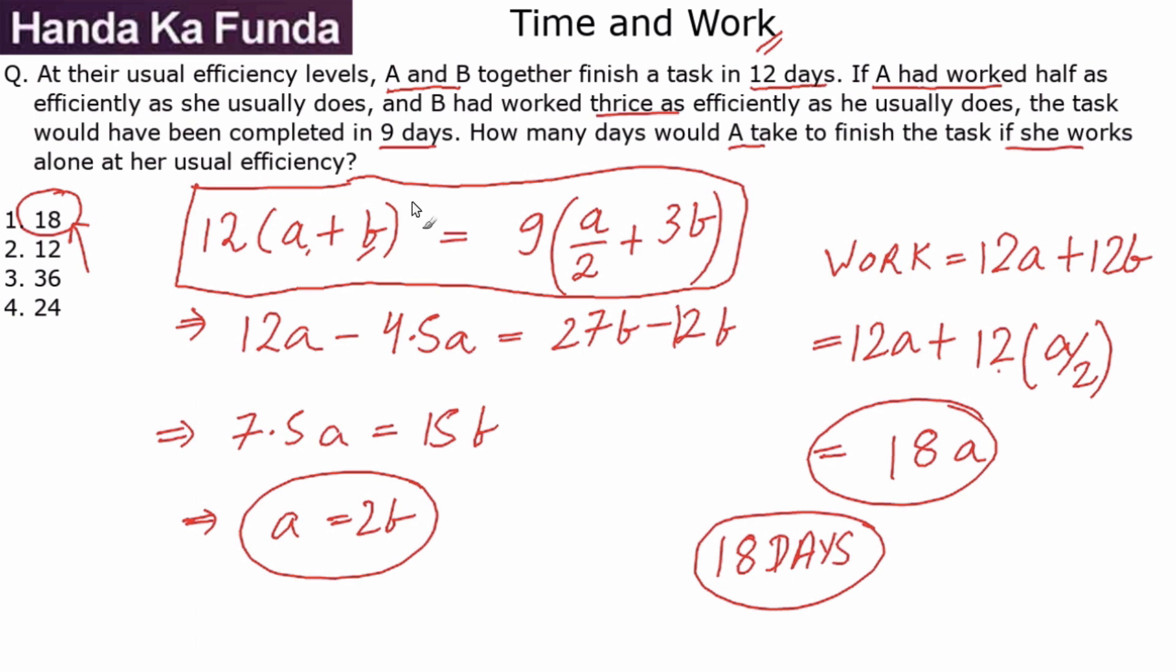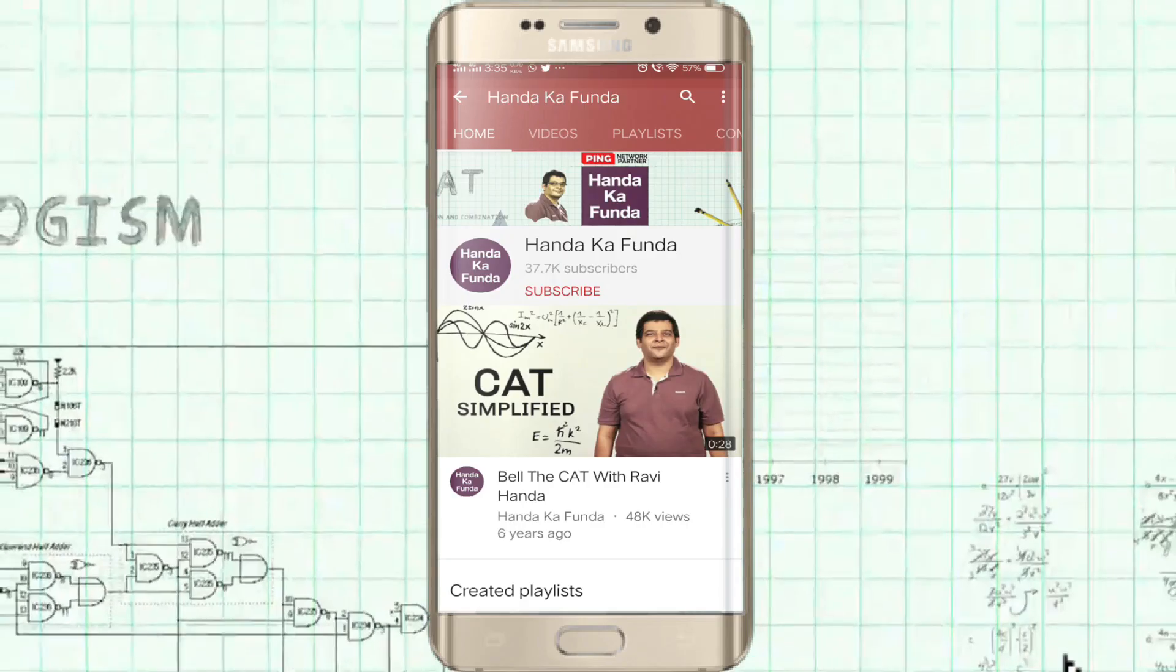All you need to do in questions like this is to form this original equation based upon the total work that needs to be done. If you get this original equation correct, then the rest of the question just follows. Hope you will be able to do that in the exam.